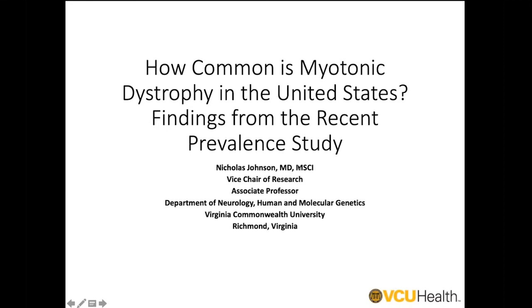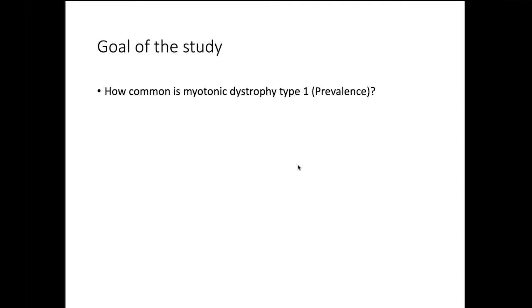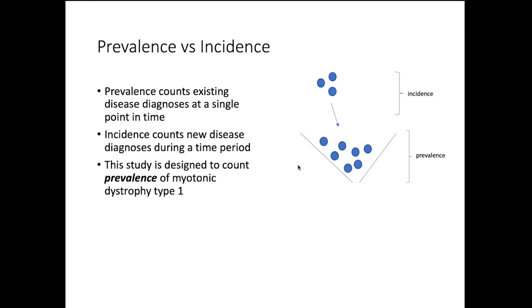Thanks for the kind introduction. And I'm happy to talk about our recent study, which seeks to understand how common myotonic dystrophy is in the United States, which was the intent of our prevalence study. So the goal of the study is deceptively simple. It's how common is myotonic dystrophy type 1? In other words, what's the prevalence of myotonic dystrophy type 1?